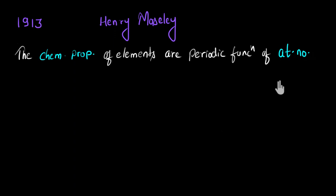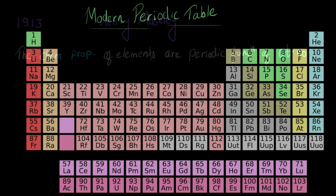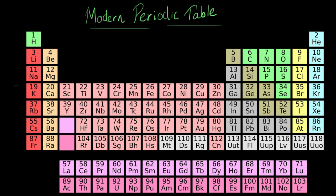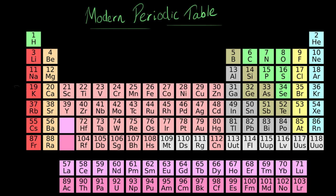Based on this, Moseley suggested going back and changing the periodic table too, and that's what we did. We replaced atomic mass and arranged elements based on their increasing atomic number — and that's how we got our modern periodic table. This table was able to solve almost all of the limitations of the old periodic table. The position of cobalt and nickel was finally settled: cobalt has a lesser atomic number than nickel, so it correctly comes before nickel in the group where its chemical properties are aligned.